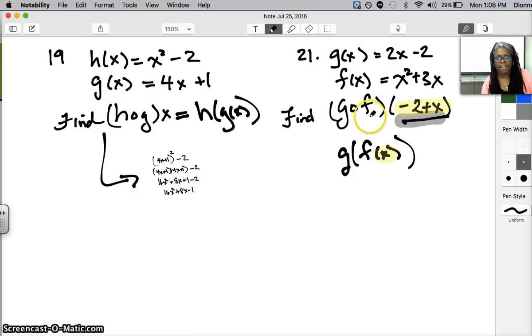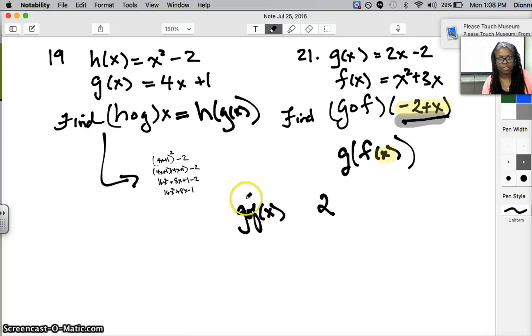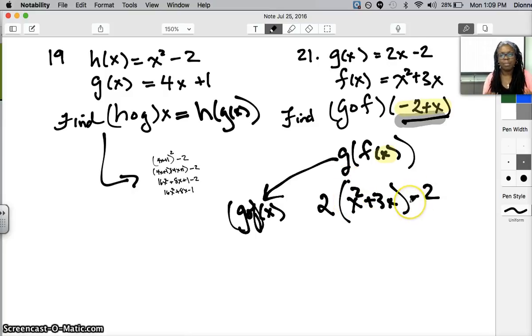I'll take the f function and put it into the g function because g(f(x)). My function looks like 2 times the quantity of x² + 3x minus 2. This is not the same problem that we're asking about. So if I do g(f(x)), I'm going to put 2 times (x² + 3x) - 2. If I simplify that, I end up with 2x² + 6x - 2.